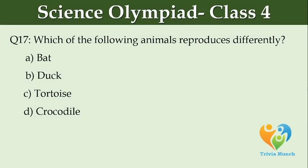Which of the following animals reproduces differently? Option A: bat, Option B: duck, Option C: tortoise, Option D: crocodile.